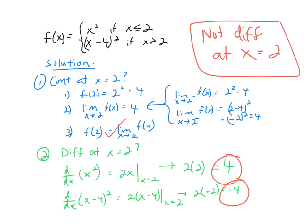If a function is not continuous, that's an automatic 'not differentiable' — you don't even need to check the slopes. And you can picture cases where the slopes are the same at a joining point: the graph is continuous and smooth, and we would say differentiable. Hopefully that gives you an idea of how to deal with piecewise functions when testing for differentiability.